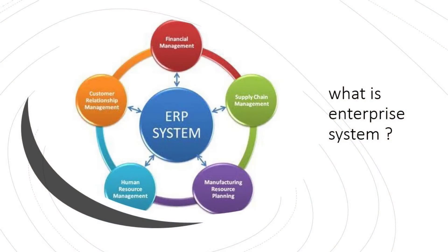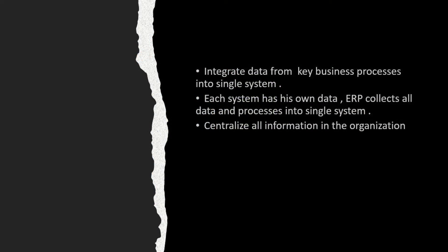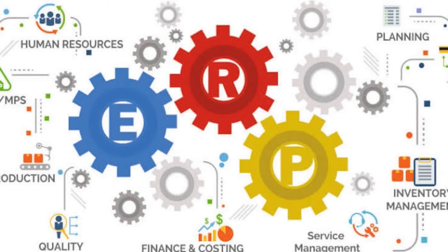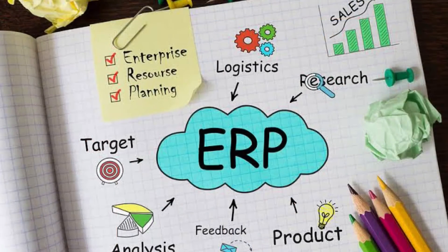What is an enterprise system? An enterprise system integrates data from key business processes into a single system. Each system has its own data, and ERP collects all of that data and processes it into a single system, so that instead of data being separated, all business process data is gathered together.